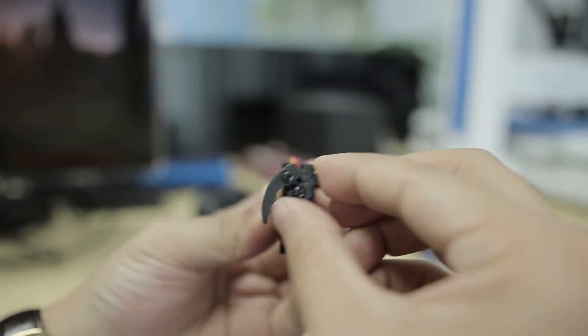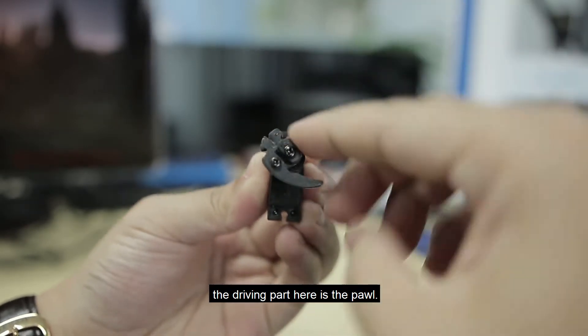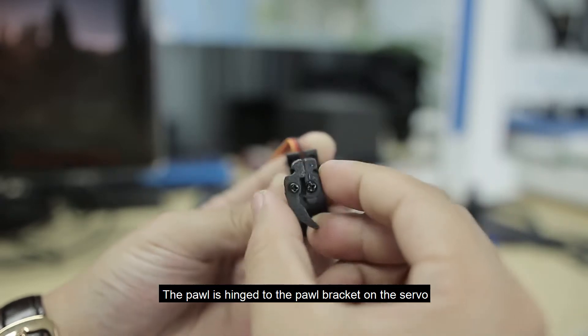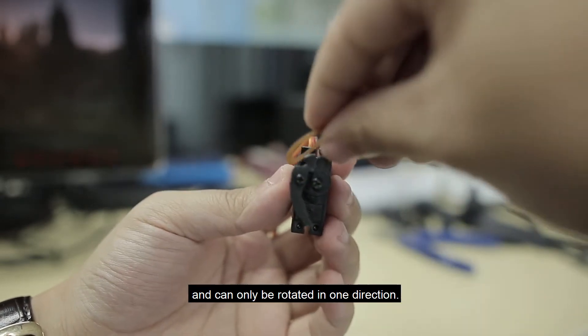Unlike most ratchet and pawl, the driving part here is the pawl. The pawl is hinged to the pawl bracket on the servo and can only be rotated in one direction.